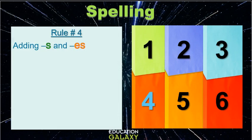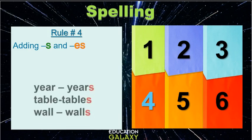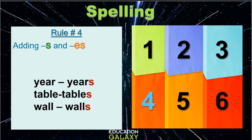To make a singular noun plural, we add an S or ES at the end. But when do you add S and when do you add ES to make a plural? Well, for most nouns, just add an S at the end to make a plural, such as these words, years, tables, and walls.